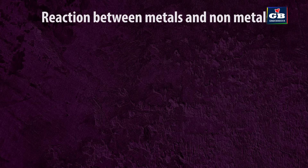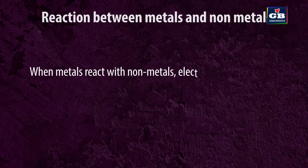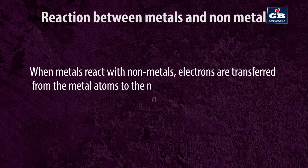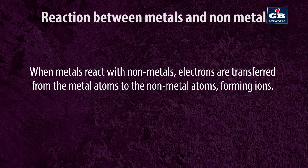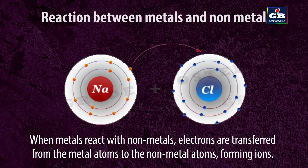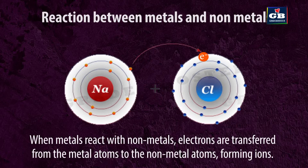Reaction between metals and non-metals. When metals react with non-metals, electrons are transferred from the metal atoms to the non-metal atoms, forming ions. The resulting compound is called an ionic compound.